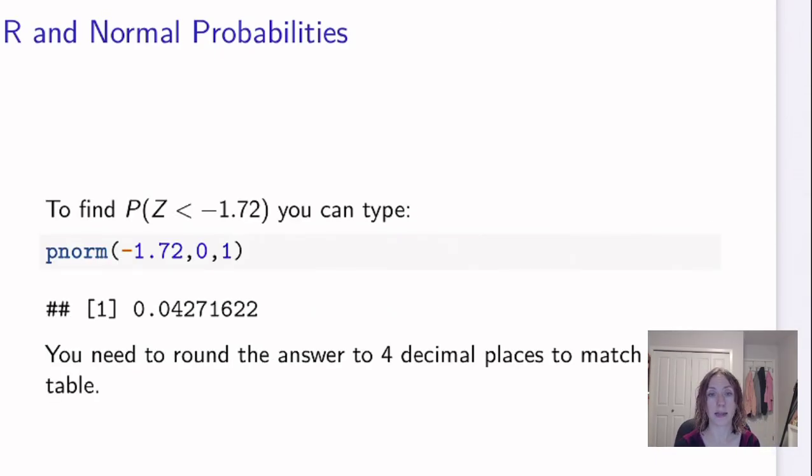Earlier, by hand, we looked at this particular problem, finding our probability that Z is less than minus 1.72. So if I was doing this in R, I would type in pnorm of minus 1.72 comma 0 comma 1. And what it would print out for me is that probability to the left. So in our slides, these gray boxes represent code that I've written into R. And the numbers that come out after the two pound signs are what the output from R would have been. Now, if I want to match this to what's going on in the Z table, I'll round to four decimal places to make sure that I get an agreement.